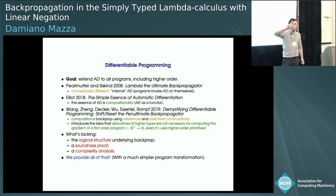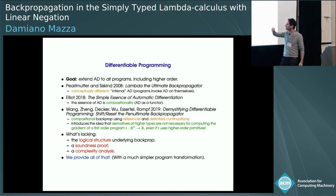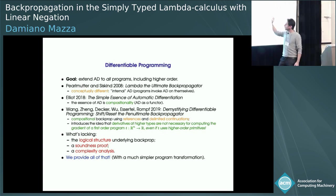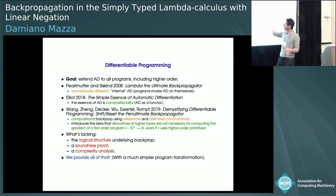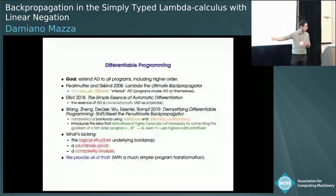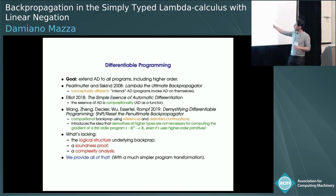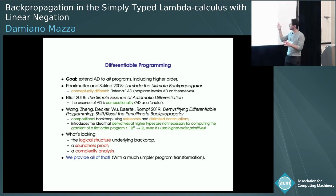Two papers have been influential for us. The first is a paper from ICFP 2018 by Connell Elliott — the first to underline the importance of compositionality as the essence of automatic differentiation, seeing AD as a functor. The second, which we owe the most to, is a paper by Wang et al. that appeared at ICFP 2019, giving a compositional implementation of backpropagation using references and delimited continuations.